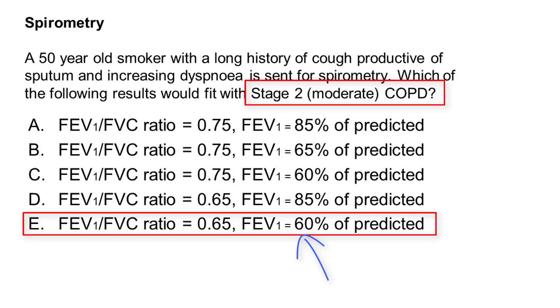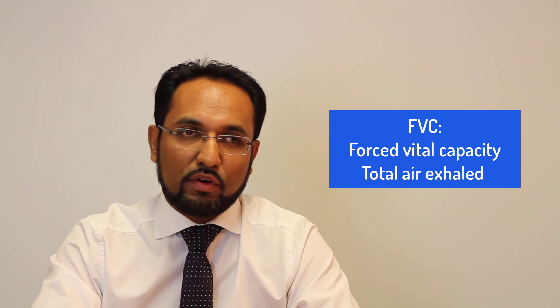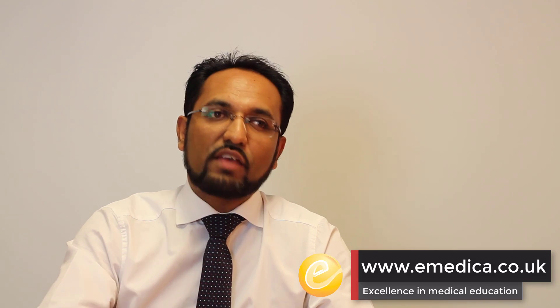To recap, these are the stages based on FEV1 percentage. FVC is forced vital capacity — the maximum air that can be breathed out in forced expiration. FEV1 is the forced expiratory volume in one second — how much air can be breathed out in forced expiration in the first second. The ratio of these two tells us whether it's a restrictive picture, above 0.7, or an obstructive picture, less than 0.7. So the FEV1/FVC ratio and the FEV1 as a percentage of expected are the two key measures.